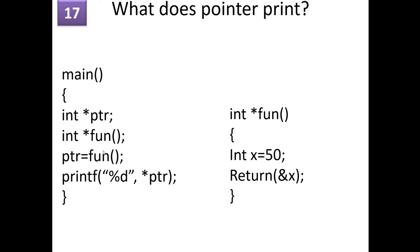What does the pointer print in this program? Here we have an integer pointer and a function returning an address. The function initializes x to 50 and returns the address of x. Will it print 50? No, because x is a local variable — as soon as the function exits its braces, x is no longer available. To avoid this, make x a global variable or use the static keyword. When you write 'static int x = 50', that variable still exists even after the function exits.